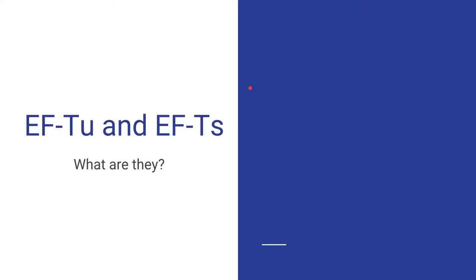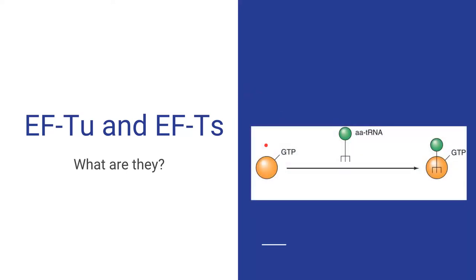I want to further clarify the distinction between EF-TU and EF-TS, as it may get confusing. In the established model for binding aminoacyl-tRNA to the ribosomes, an EF-TU and GTP binary complex binds with aminoacyl-tRNA to form a ternary complex.